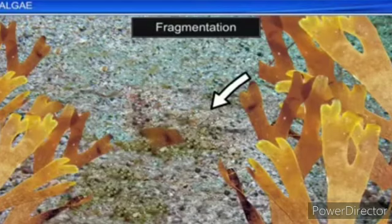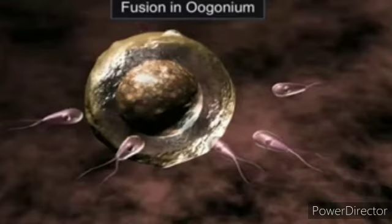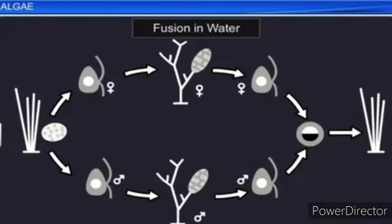Vegetative reproduction takes place by fragmentation. Asexual reproduction in most brown algae is by biflagellate spores that are pear-shaped and have two unequal laterally attached flagella. Sexual reproduction may be isogamous, anisogamous, or oogamous. Union of gametes may take place within the oogonium. The gametes are pyriform or pear-shaped and bear two laterally attached flagella.